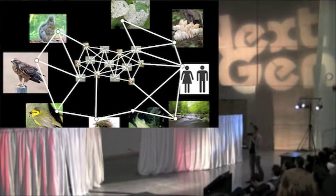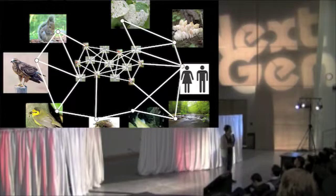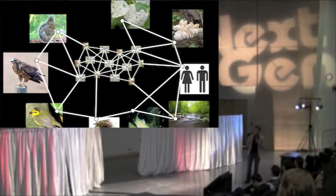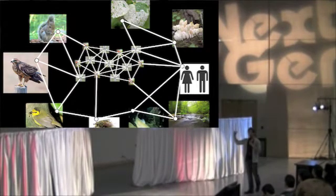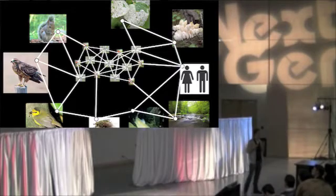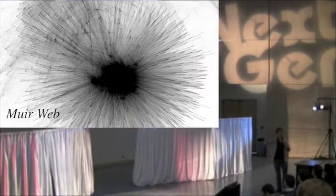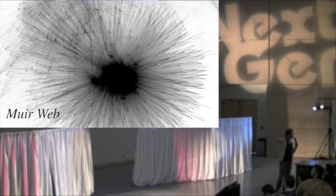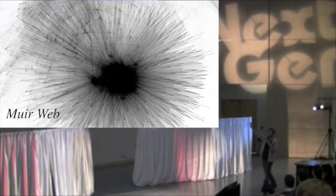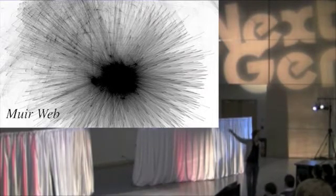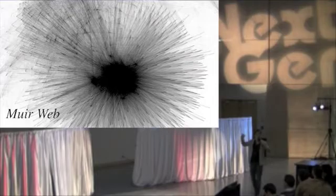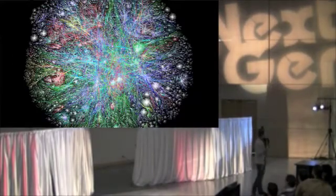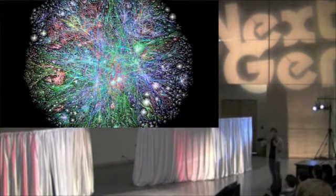We can expand that even further to include things like squirrels, which may eat the mushrooms and live in the trees. We can include hawks, which eat the squirrels, and even non-living things like rivers — all part of this net, this fabric. Taking that to an ecosystem level, you end up with something called a mirror web. This web represents an entire ecosystem. Each point represents an element — living or non-living — and each line represents a relationship. All of these things come together and create a net that captures nutrients, captures sunlight, and cycles them continuously.